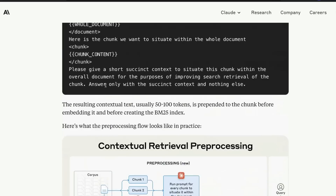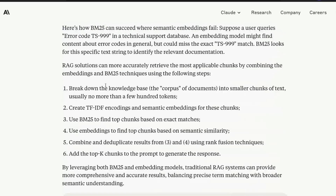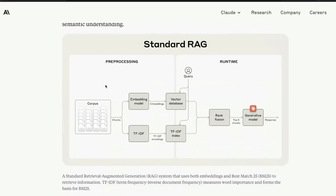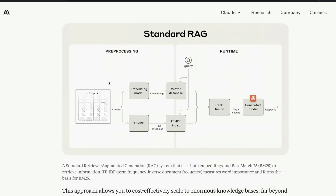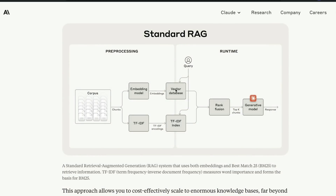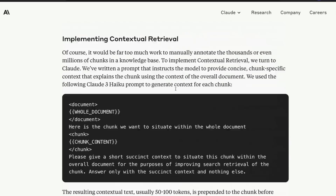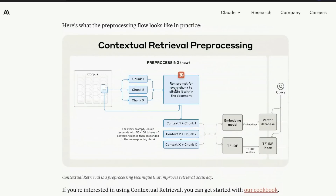One final part before we close down this video. We know this is a good standard RAG solution. When you combine the typical embedding part with BM25, it further becomes better. We know that adding chunks with context makes a difference. How you create the context is up to you — you want a human, you want an LLM, Gemini, whatever you want to do. But we also know it is going to add overhead, cost, maintenance and all those things.